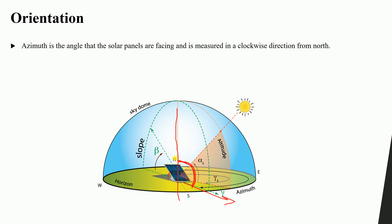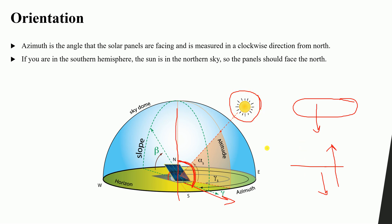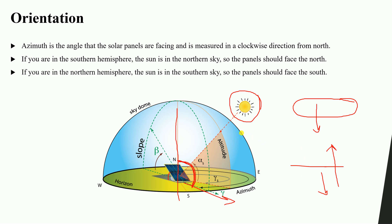To determine the azimuth angle, you first need to understand a simple rule: if you are in the southern hemisphere, you direct your panels to the north. If you are in the northern hemisphere, you direct your panels to the south. This is so the panels face the sun throughout the whole year. In the southern hemisphere the sun is in the northern sky, and in the northern hemisphere the sun is in the southern sky.